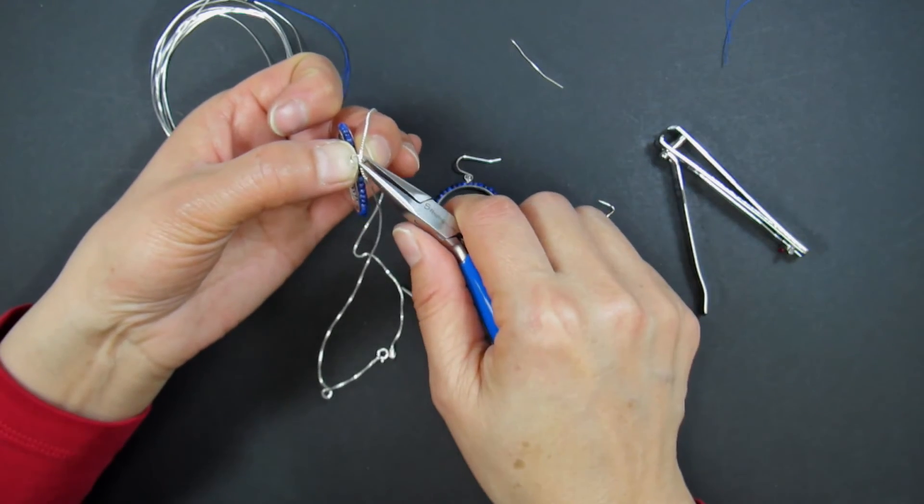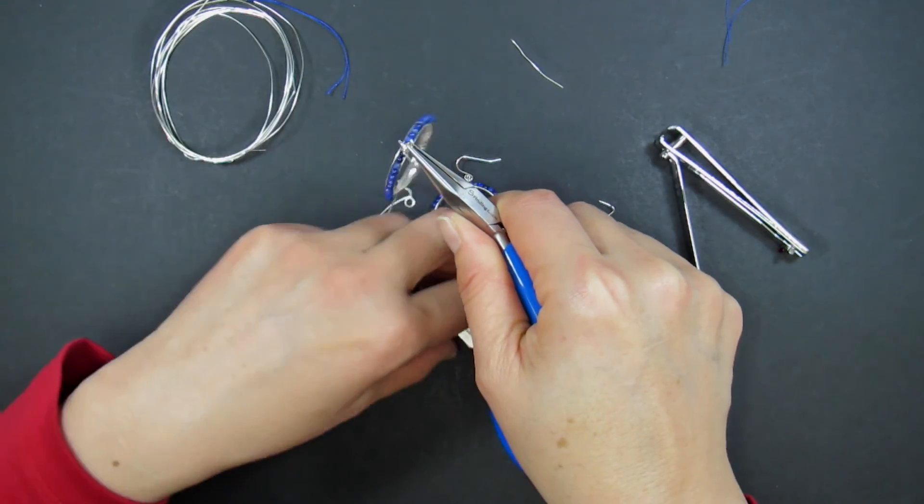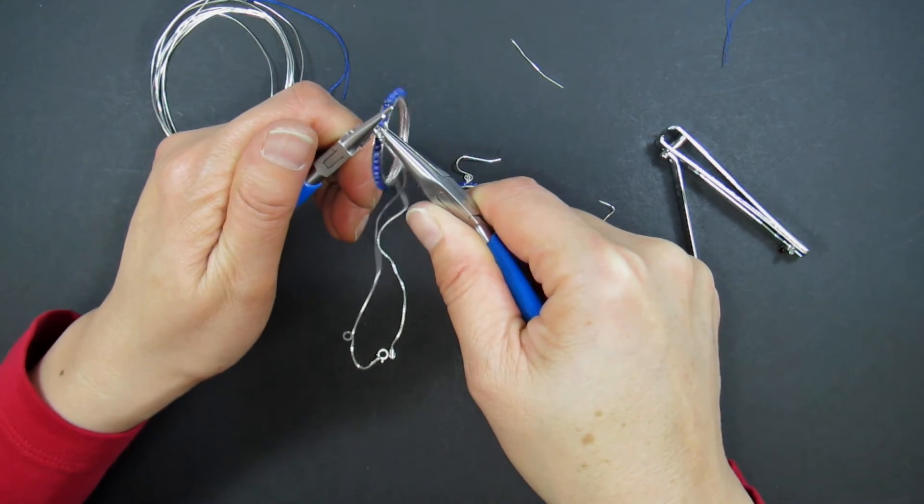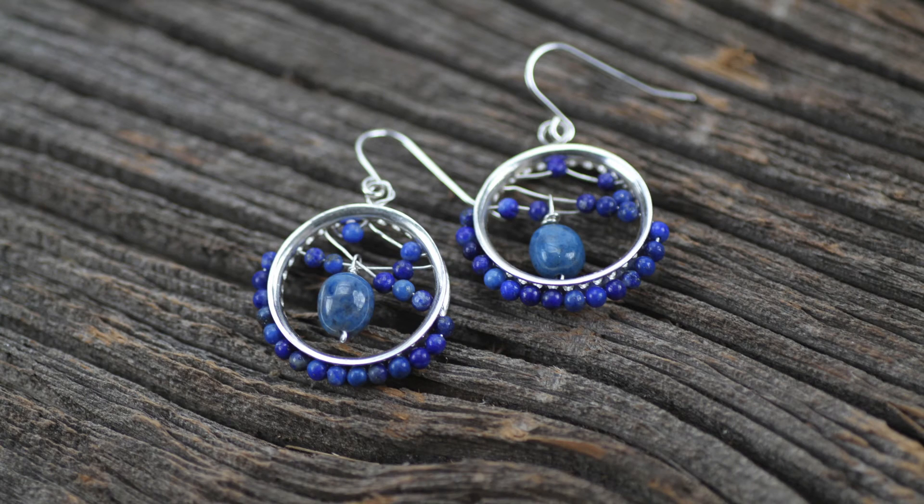You need not feel limited to wrapping the entire frame. By wrapping just the bottom half with stone, you can then bead the wire back and forth through the center of the wheel, creating a beautiful Dreamweaver look.